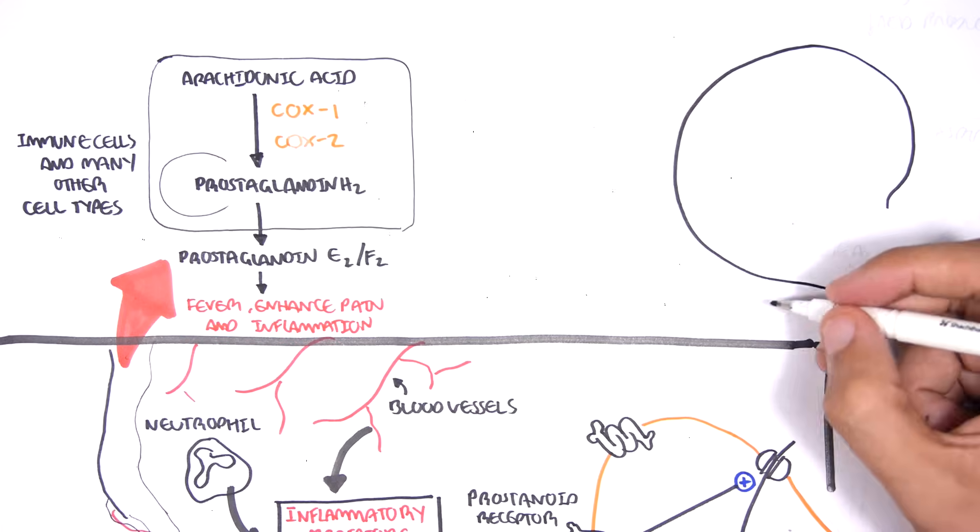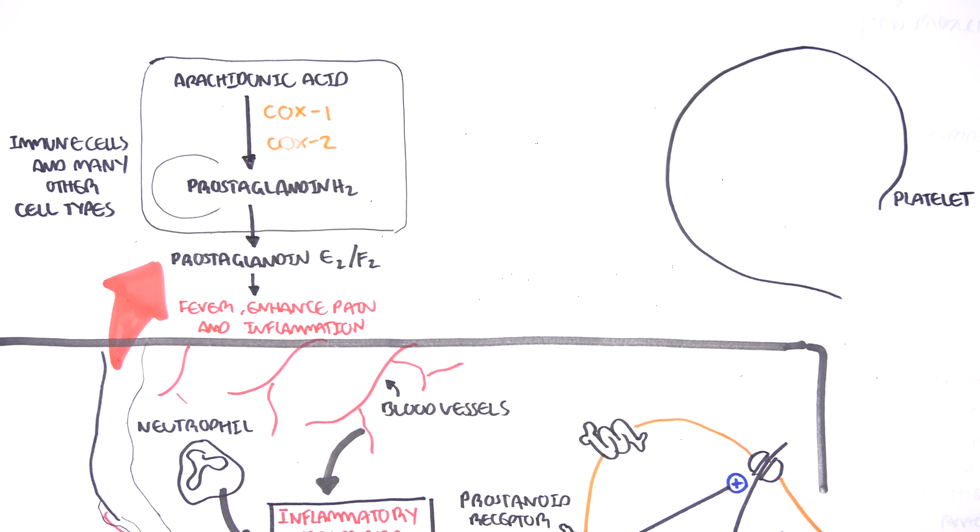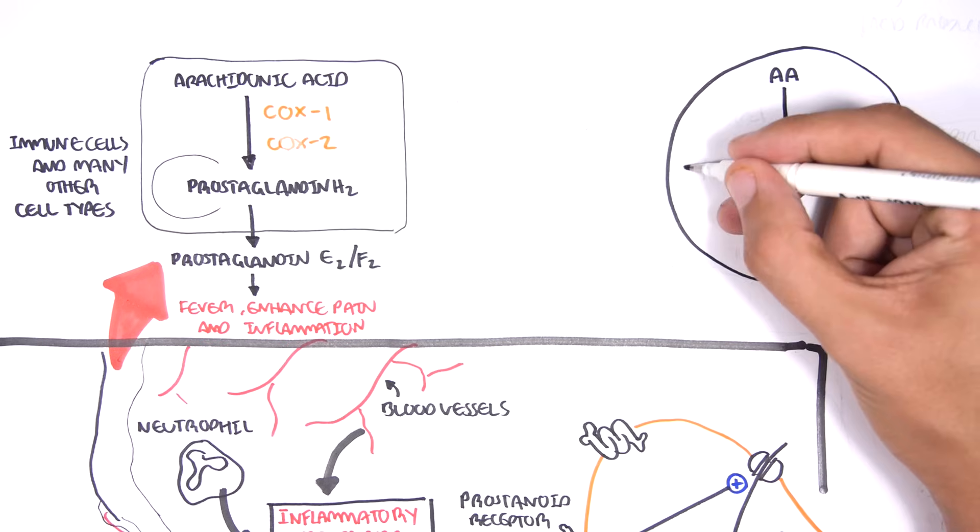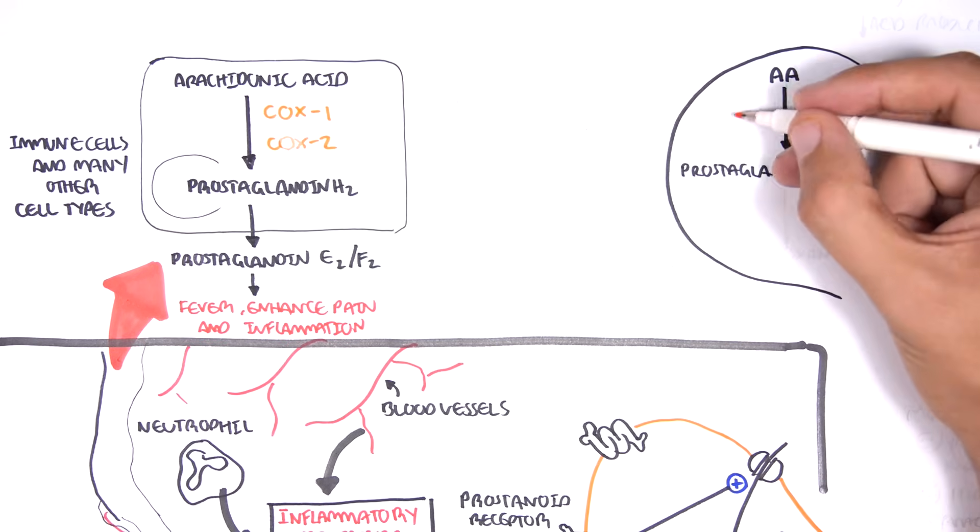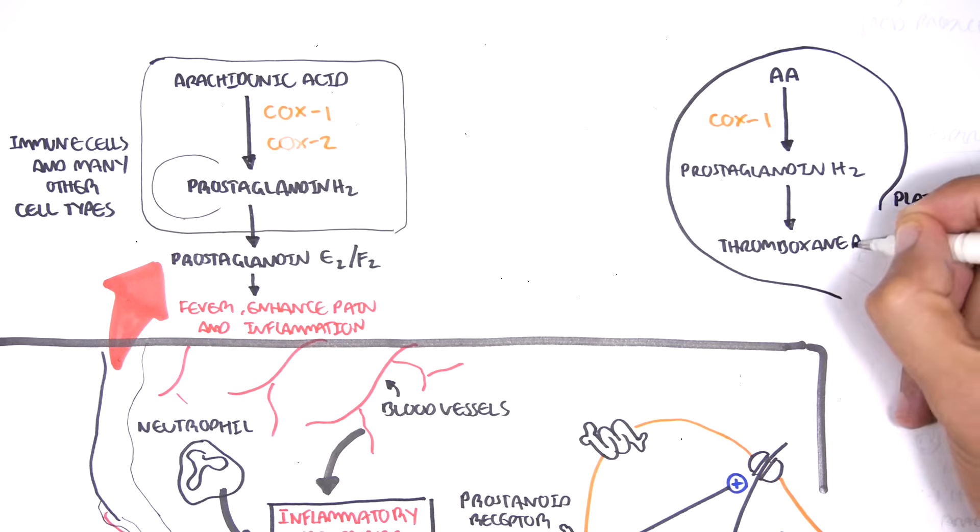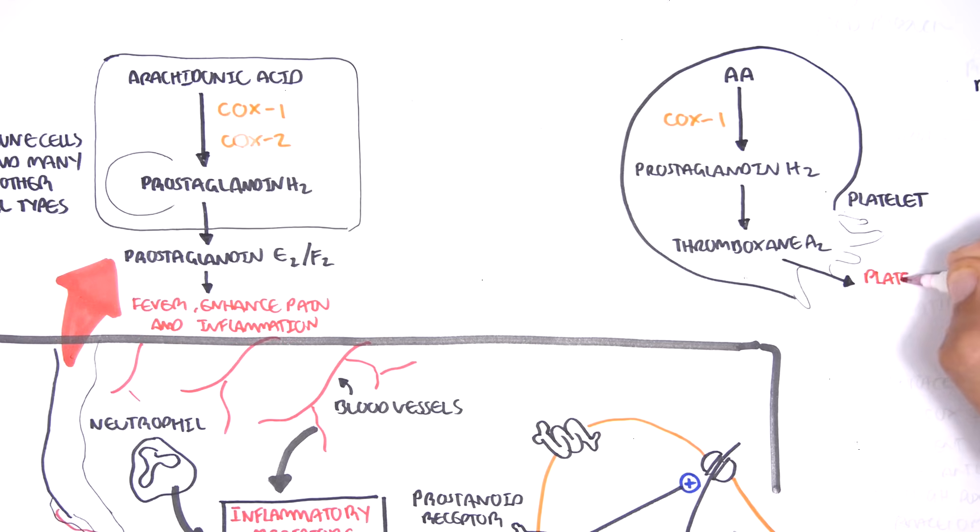For example, let's take a look at platelets. When we cut ourselves, we need to stop bleeding. Platelets help with this. What happens here is that COX1 converts arachidonic acid to prostaglandin H2. Prostaglandin H2 can be converted to prostaglandin E2 and F2. However, in platelets, something different happens. Prostaglandin H2 is actually converted to thromboxane A2. Thromboxane A2 is a chemical causing platelet aggregation to help stop bleeding.